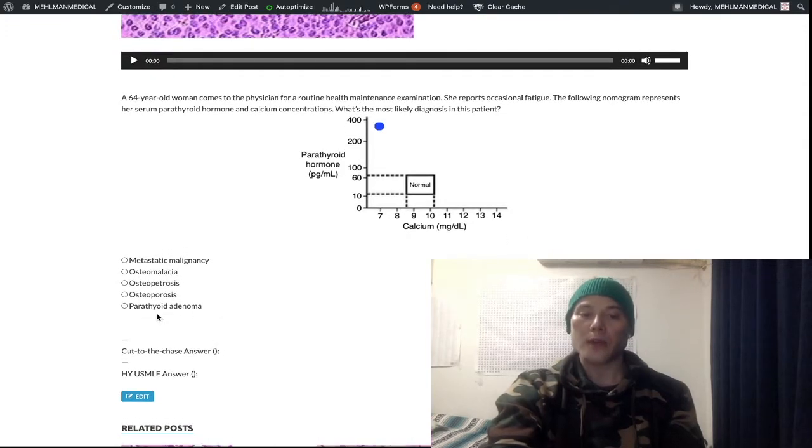So primary hyperparathyroidism, high parathyroid hormone, high serum calcium, we would not have low serum calcium, so we can eliminate that. It should be noted that secondary hyperparathyroidism in the setting of renal failure would in fact have a high PTH and a low calcium, but we don't see renal failure here as one of the answers.